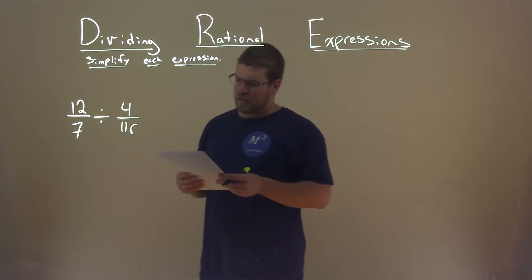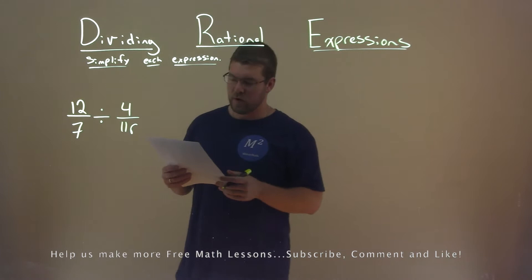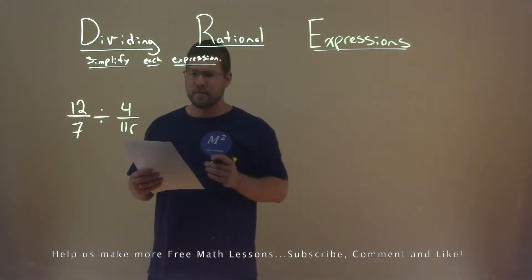We're given this problem right here, 12 over 7 divided by 4 over 11r, and we need to simplify this expression.